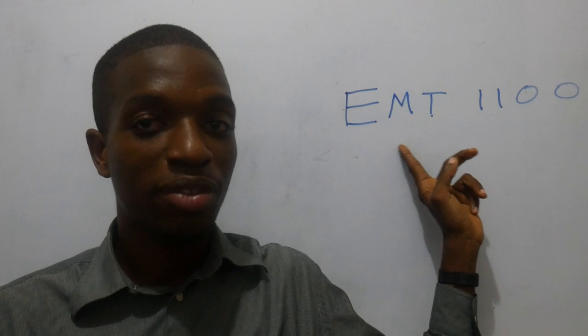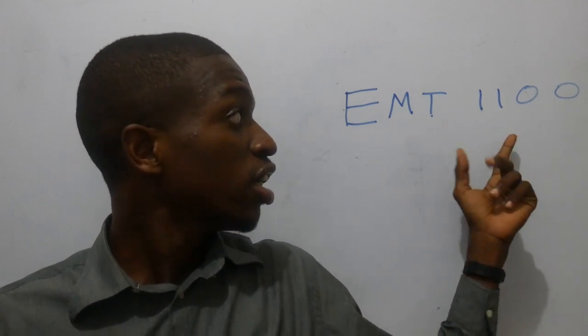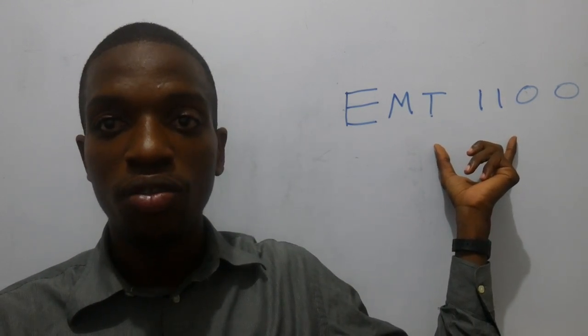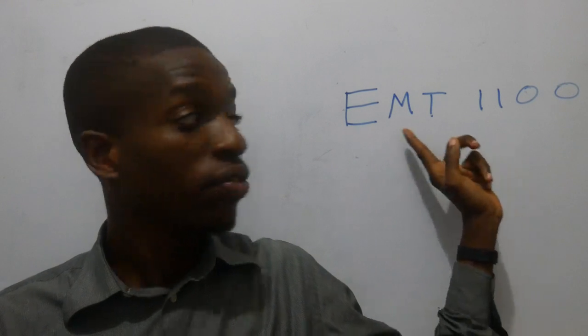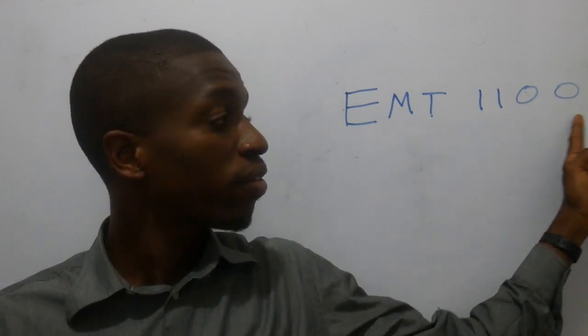Alright, now on the timetable you see a lot of things looking like this. This is an example of one of the courses you'll be doing: Engineering Math 1100.